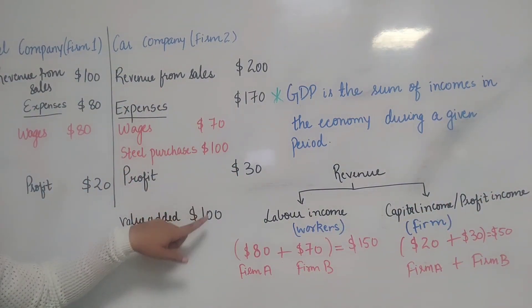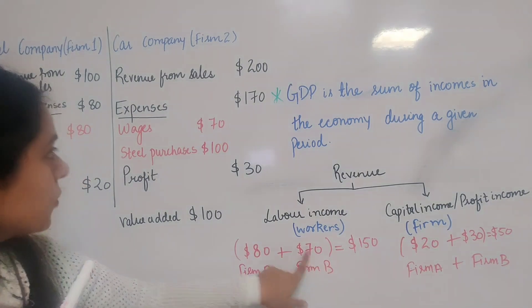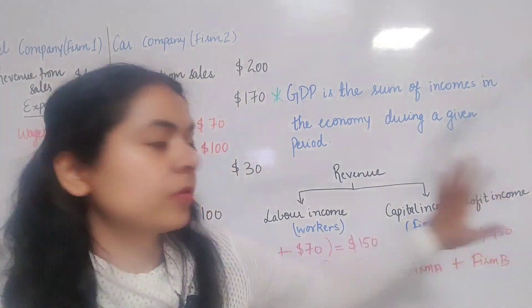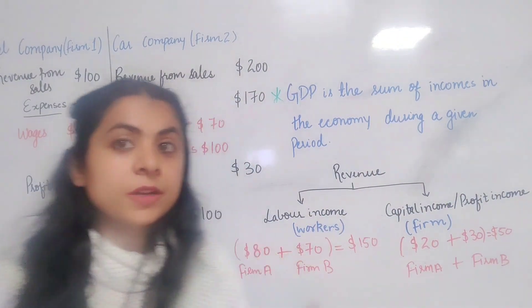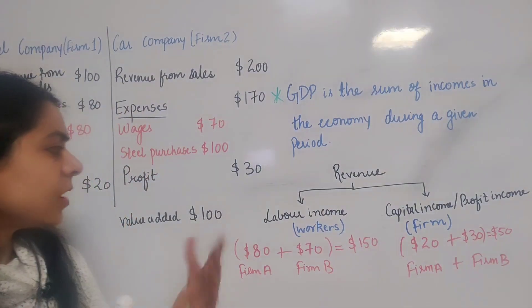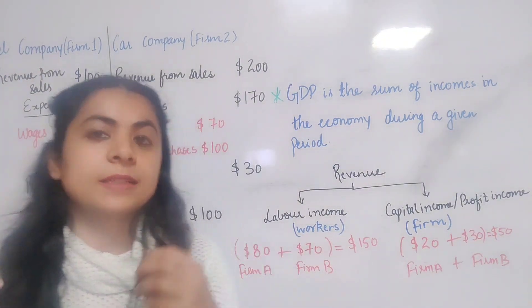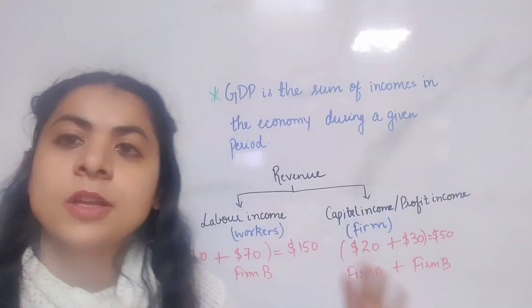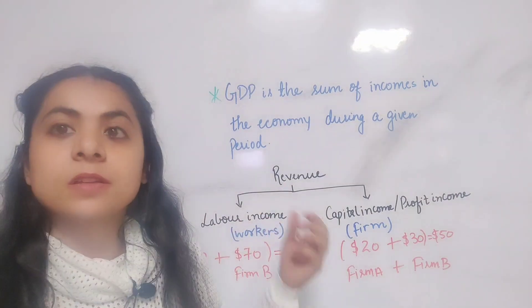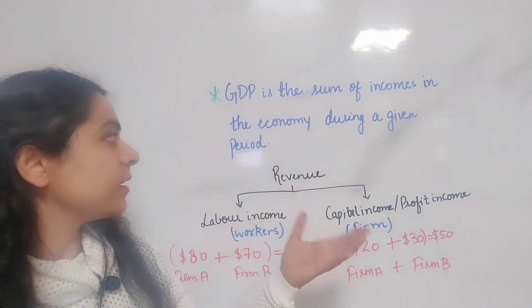Similarly, out of the $100 value added by the car company, $70 goes to workers as wages and $30 goes to the firm as profit income. For the economy as a whole, labor income equals $150 and capital income equals $50. Value added equals the sum of labor income and capital income: $150 + $50 = $200. This gives our third definition: GDP is the sum of incomes, or more specifically, the sum of factor incomes in the economy during a given period.